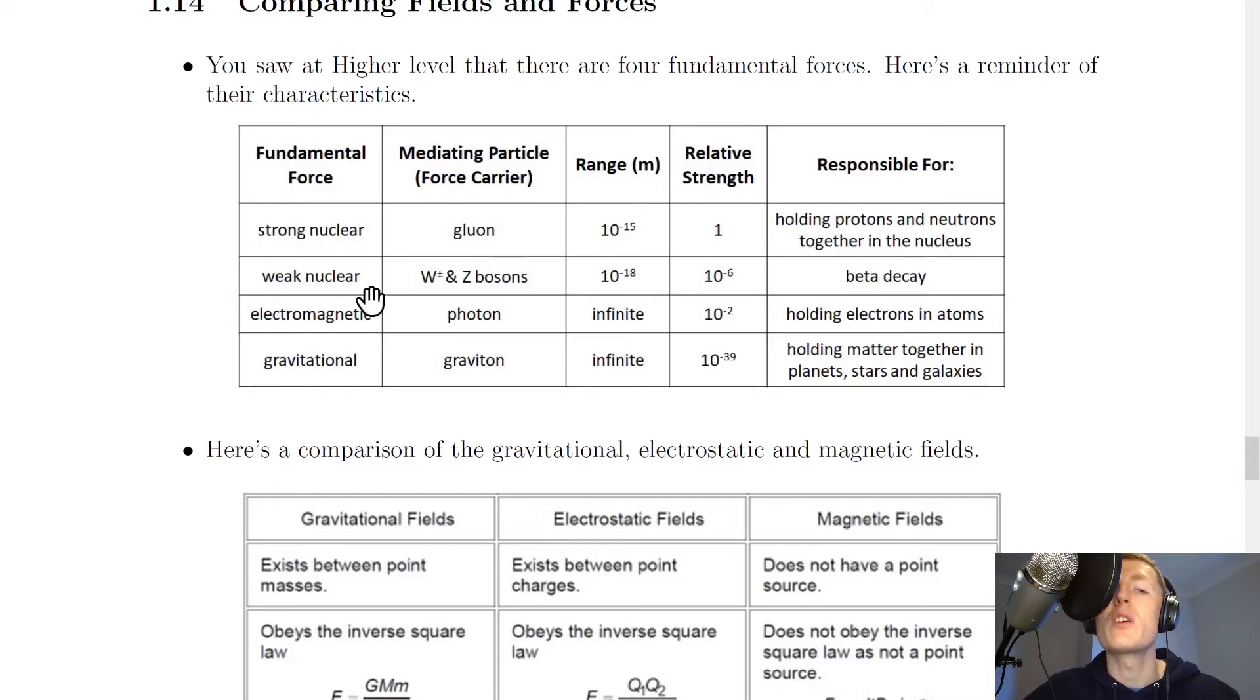Next we have the weak nuclear force and this has mediating particles of the W plus and minus and Z bosons. And it's got a range of about 10 to the minus 18 meters and a relative strength compared to the strong force of about 10 to the minus 6. And lastly it's responsible for beta decay.